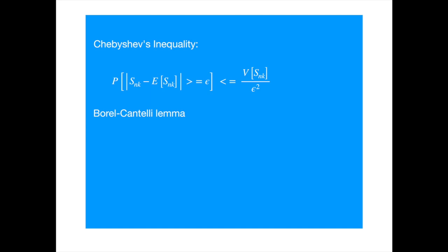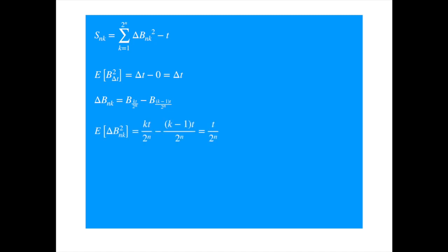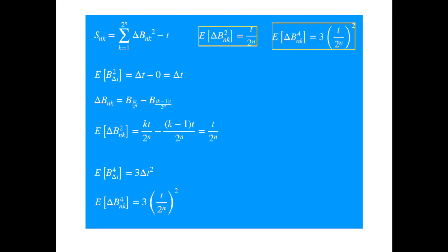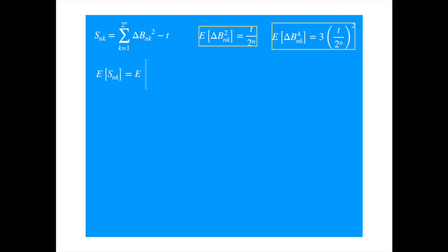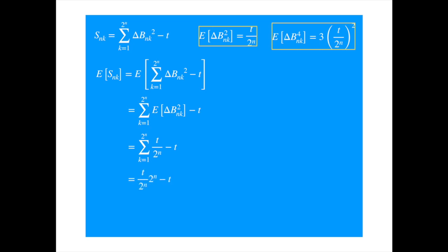To apply Chebyshev's inequality, we need to find the mean and variance of s, as s is the sum of the squares of Brownian increments. It would be helpful to recall the formulae for the moments of the Brownian motion from a previous video. Recall that the second moment of Brownian movement over a given interval is the length of the interval. Our interval is defined as follows, so its expected value is the difference between the time indices, which is t over 2 to the power n. Recall also that the fourth moment of the Brownian increments is 3 times the square of the interval. Taking expectation and interchanging sum and expectation, then substituting the expression for the second moment and applying the sum of constant rule, we get that the expected value of s is 0.